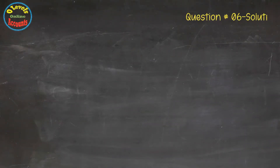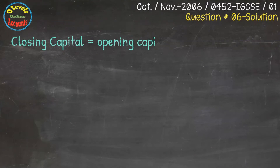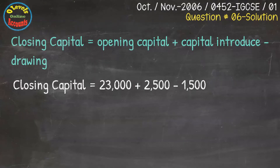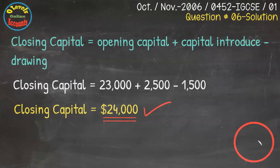Question number 6 from October/November 2006, 0452 IGCSE Paper 1. In this question, we have to find out the value of closing capital. We use the equation: closing capital equals opening capital plus capital introduced minus drawings. By putting all given values, we get the closing capital value of 24,000. This is the correct answer, available with the B option in the question.